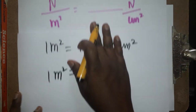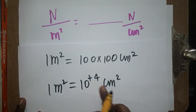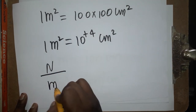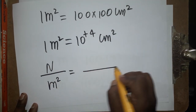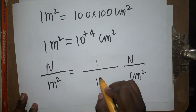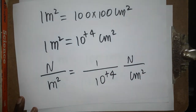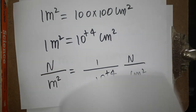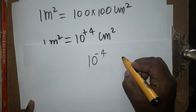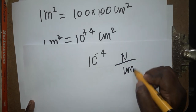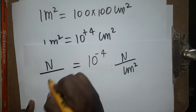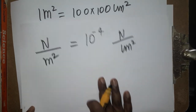Now we have 1 meter square equal to 10 to the power 4 centimeter square. So, newton per meter square equals newton per centimeter square. When we take 10 to the power 4 from the denominator to the numerator, it becomes 10 to the power minus 4 newton per centimeter square equal to newton per meter square.